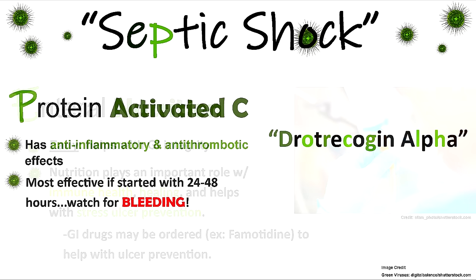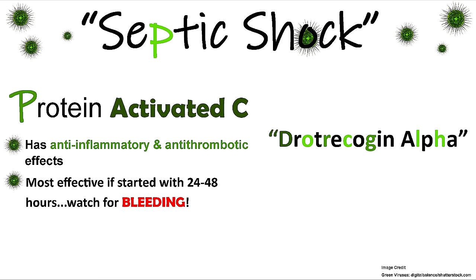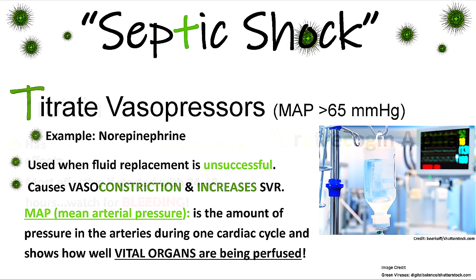P is for Protein activated C — this has anti-inflammatory and antithrombotic effects, which we need given the massive inflammation and small clots forming throughout the body. The medication is drotrecogin alfa, and it is most effective if started within 24 to 48 hours of septic shock. Because of its antithrombotic effect, monitor for bleeding.